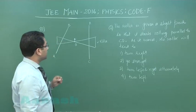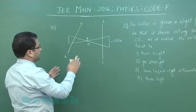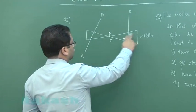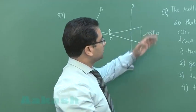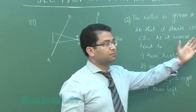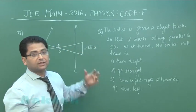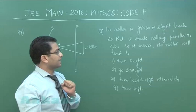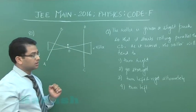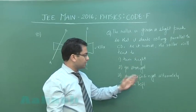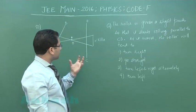There are two rails—one is CD, the other is AB—and they are unsymmetrical. There is a roller in the form of a cone which can roll in this way. The roller is given a slight push so that it starts rolling parallel to CD for the initial instant. As it moves, the roller will tend to turn—right, straight, left, right and turn left?